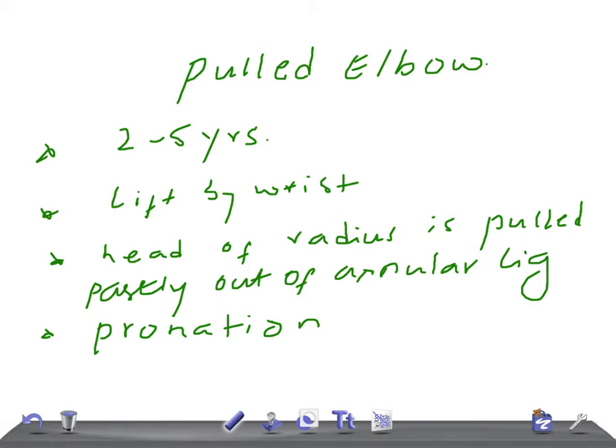The mother says she has never noticed any kind of injury or trauma. When you take an x-ray, everything is normal. So what's the diagnosis? Look at the age of the patient, look at the position of the forearm. From this, you can get an idea that there might be a pulled elbow.